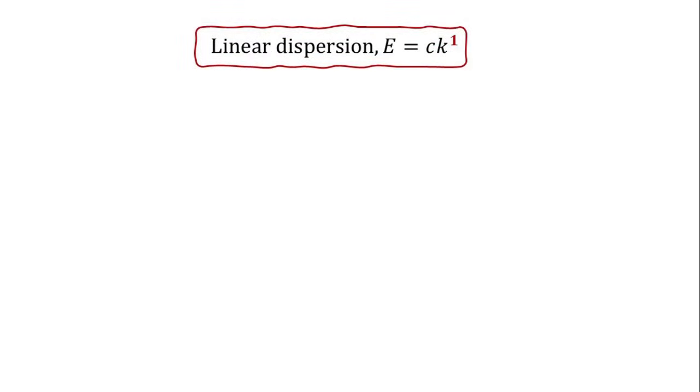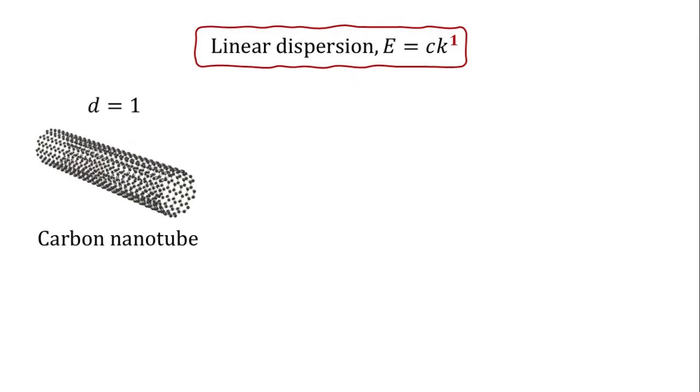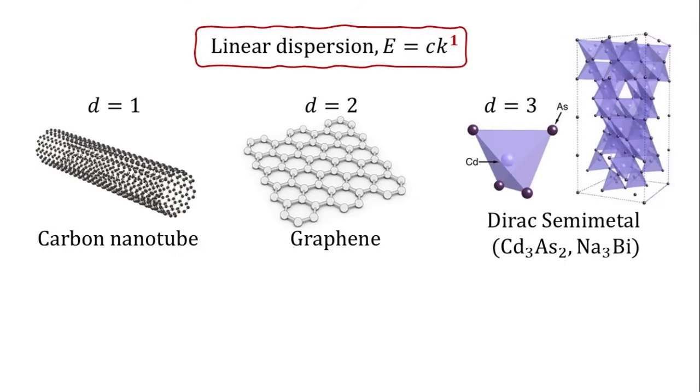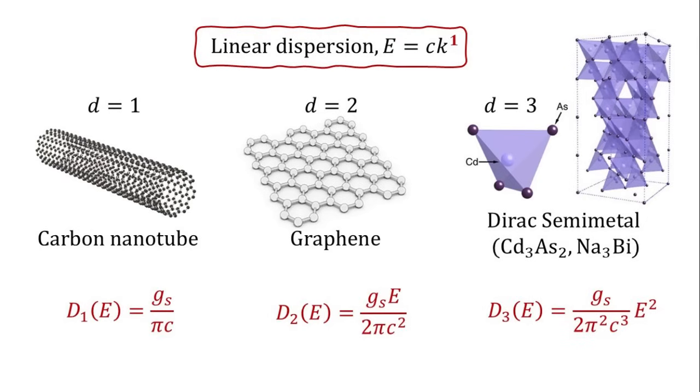Finally, let's repeat this exercise for materials with linear energy dispersion. In one dimension, an example of a material with linear energy dispersion is a metallic carbon nanotube. In two dimensions, graphene exhibits a linear energy dispersion. For three dimensions, topological Dirac semimetals, such as cadmium arsenide, are examples of materials with linear dispersion. Using our formula, we find that the density of states behaves differently across dimensions. In 1D, it remains constant with respect to energy. In 2D, it increases linearly with energy. And in 3D, it grows quadratically with energy.